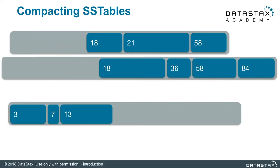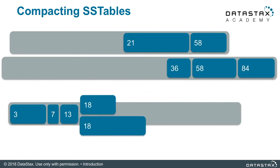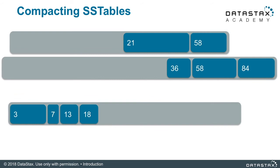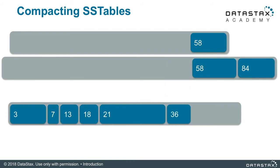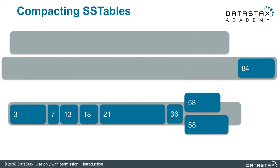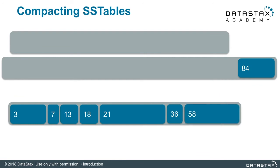Partition 13 is next — it's actually full of tombstones, so a lot of those go away because those tombstones are past the GC grace seconds period. Here comes our 18s — they shrink as well, again a lot of stale data. Partition 21 comes in; there haven't been any updates or deletes in partition 21, so it actually stays the same. Partition 36 comes in and shrinks because it has stale tombstones. Partition 58 comes in — the overall new size is smaller than the two partitions combined, but still larger than either one because not all the data was stale. Partition 84 is full of expired tombstones, so we compact it out.